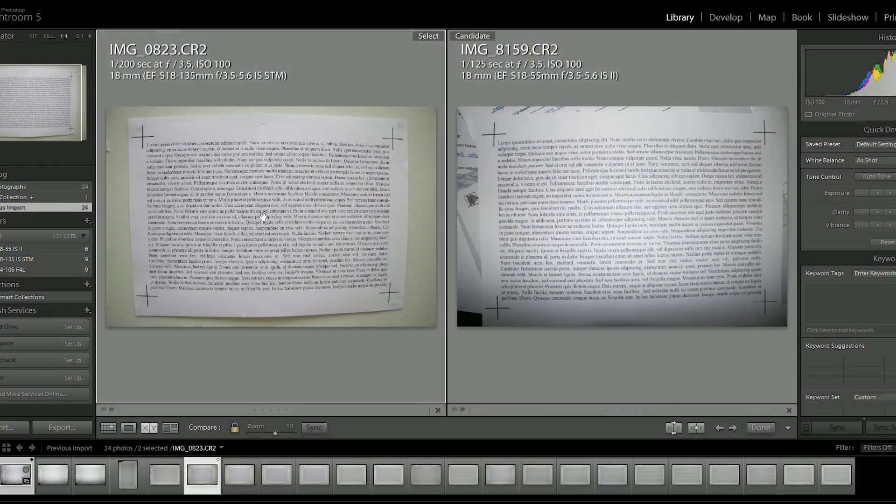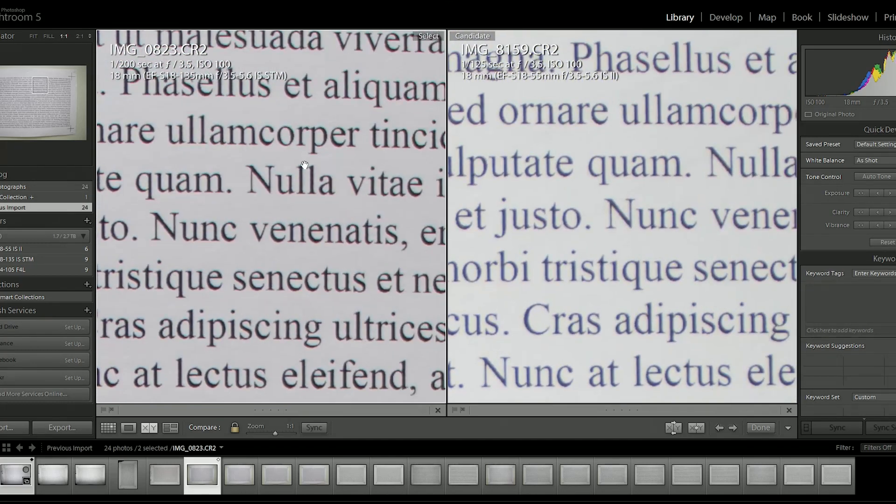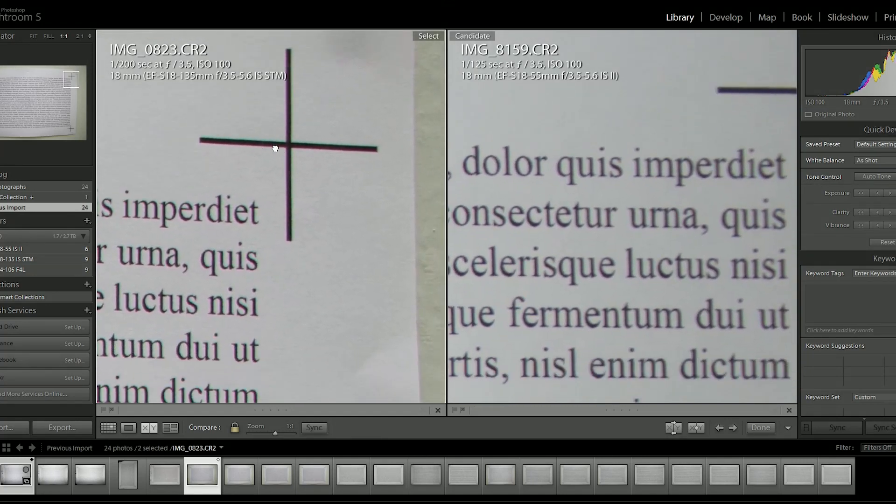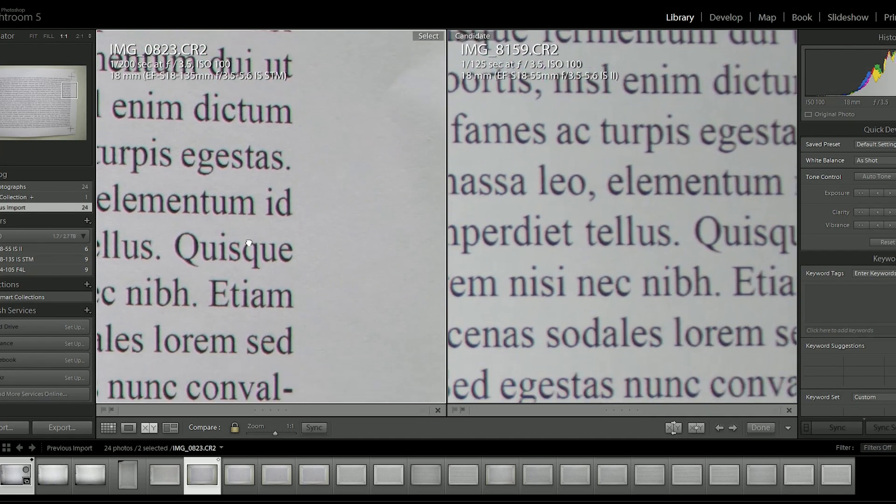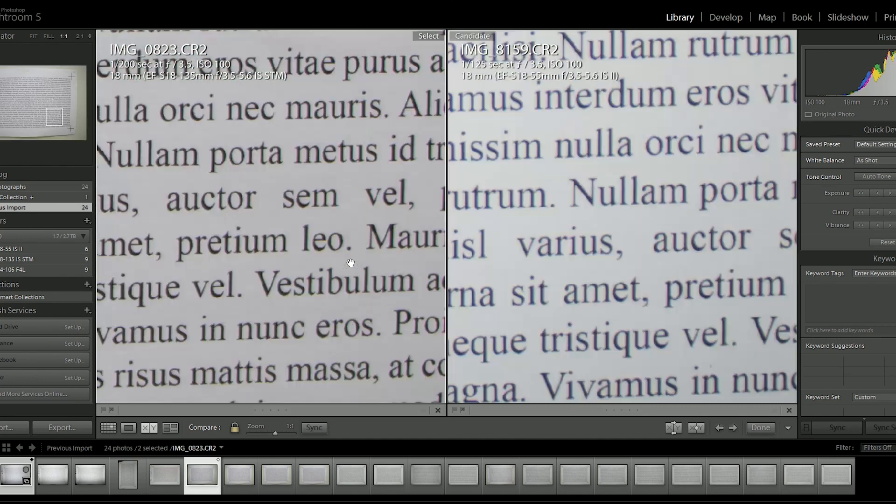These two lenses, the 18-135 and 18-55, are actually very similar in terms of image quality. Both are not amazing, both are not very sharp. I find the 18-55 a little softer around the edges at 18mm. However, the 18-135, especially at 18mm, has a lot more chromatic aberration around the edges.